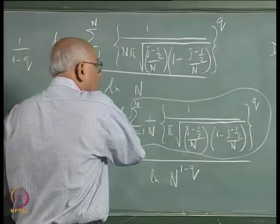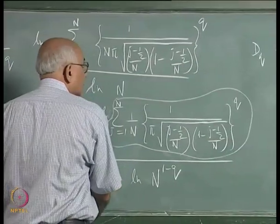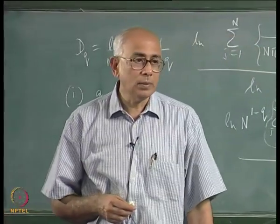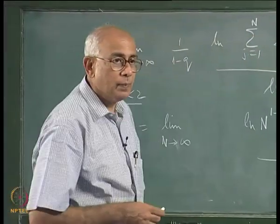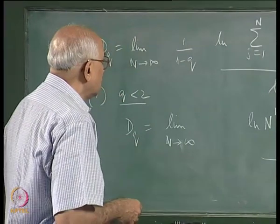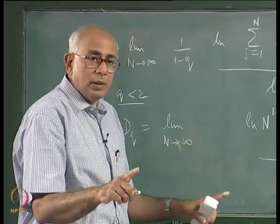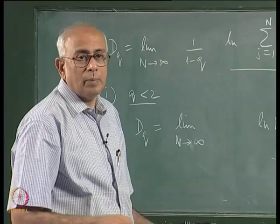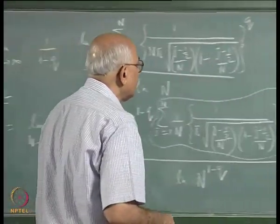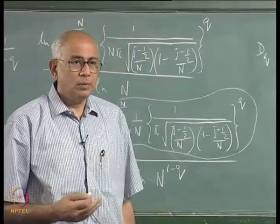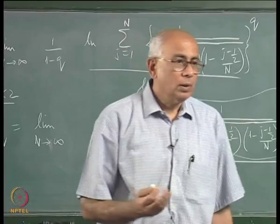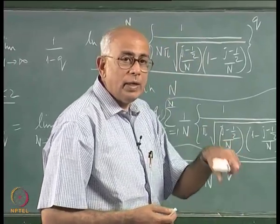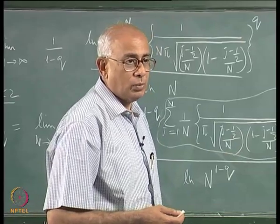So D_0 was in any case equal to 1. We now discover that D_q = 1 for all q < 2. For a uniform density (like the Bernoulli shift or the tent map at fully developed chaos), D_q = 1 for all q. But here for q < 2 we can assert it is 1, while for q ≥ 2 we must re-examine the problem.